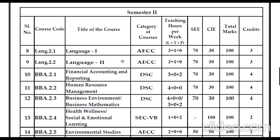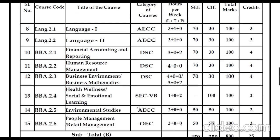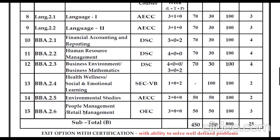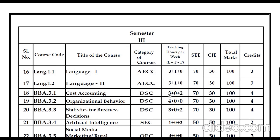In the second semester you will also have two languages and three core discipline subjects: Financial Accounting and Reporting, Human Resource Management, Business Environment, and Business Mathematics. Skill enhancement is Health, Wellness, and Social and Emotional Learning. Ability enhancement is Environmental Studies, and one open elective — People Management or Retail Management.